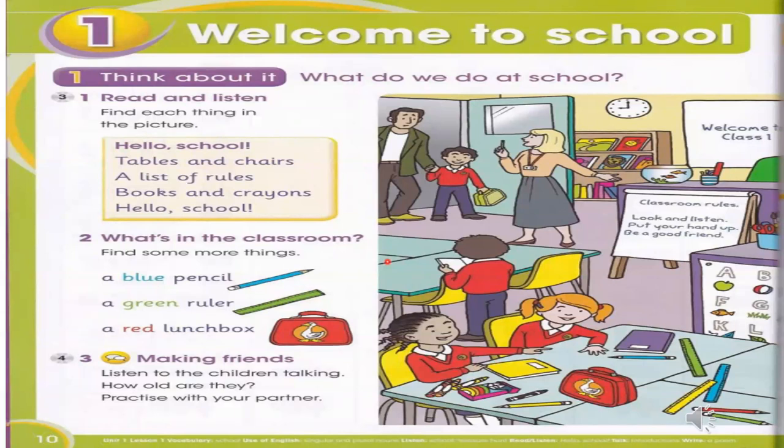Track 3: Hello school, tables and chairs, a list of rules, books and crayons. Hello school.